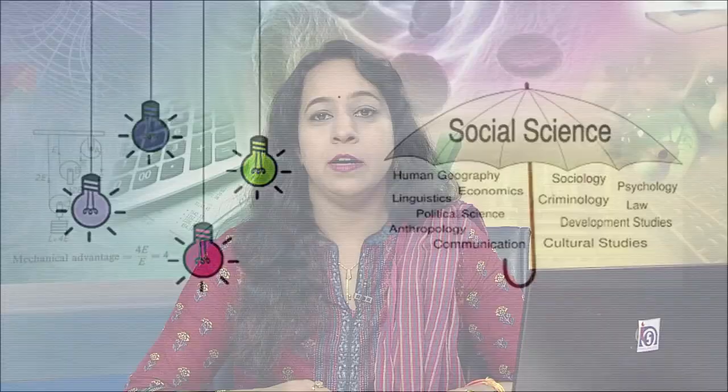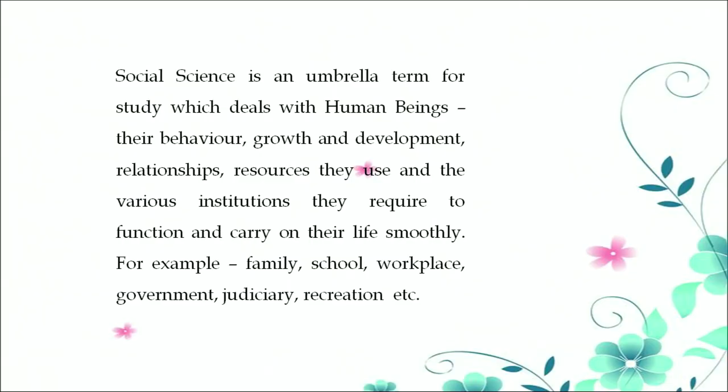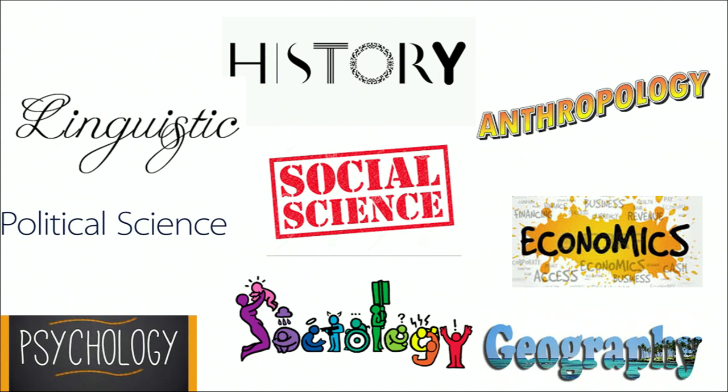Social science is an umbrella term for a study which deals with human beings — their behaviors, their growth and development, relationships, resources they use, and the various institutions they require to function and carry on their life smoothly. For example, we study about family, school, workplace, government, judiciary, and recreation. That makes social science a complete science related to history, anthropology, economics, sociology, geography, psychology, political science, and linguistics.